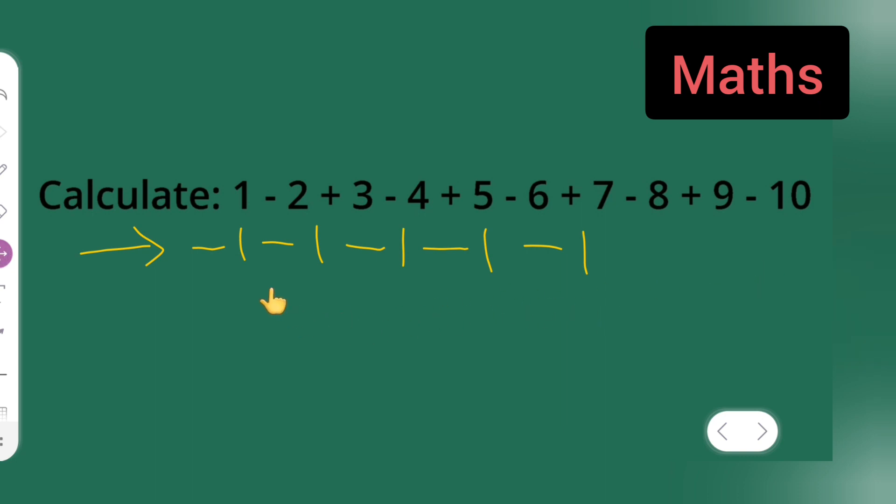So basically what you are going to get is if you add all these numbers minus 1 minus 1 minus 1 minus 1 minus 1. So it will be minus 3 minus 2 right, which is equal to minus 5. Or even you can write it directly minus 5.